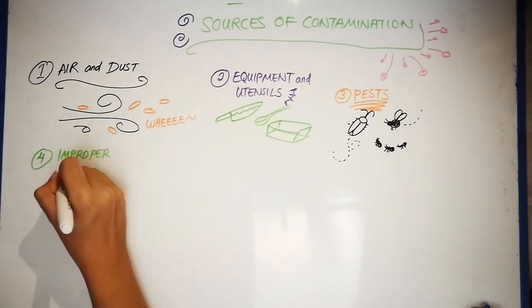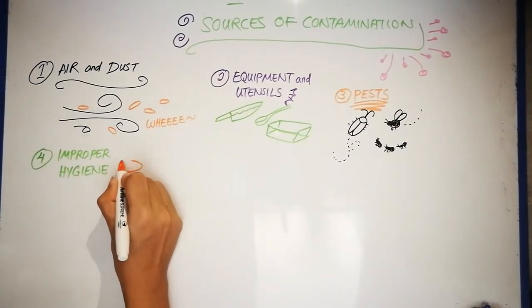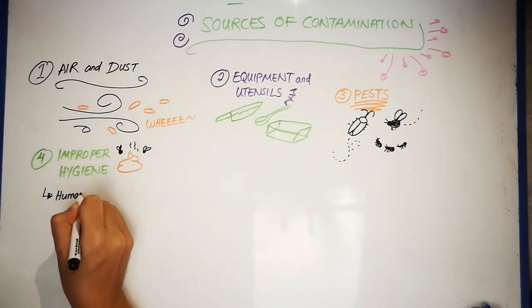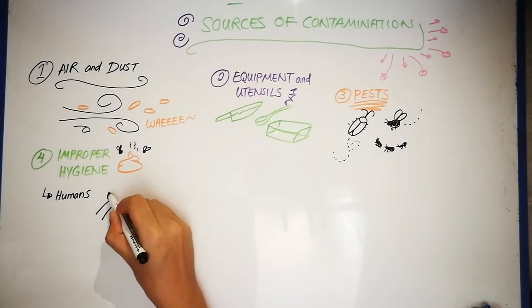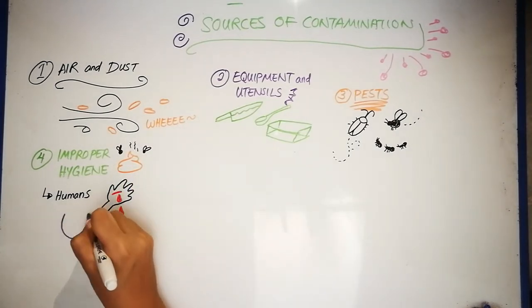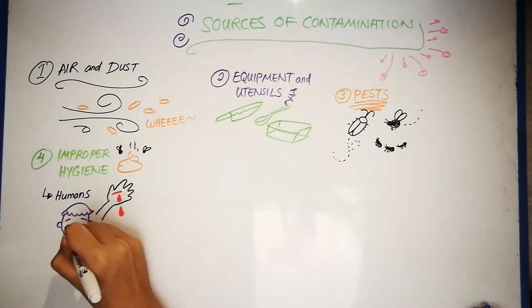Spoilage microbes can also be transferred from food handlers who did not practice good hygiene. The skin, mucous membranes, cuts, open sores or skin infection of humans can serve as reservoirs of pathogens. For example, Staphylococcus aureus.